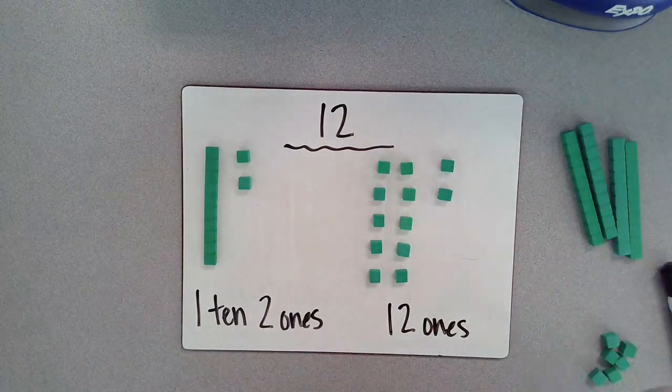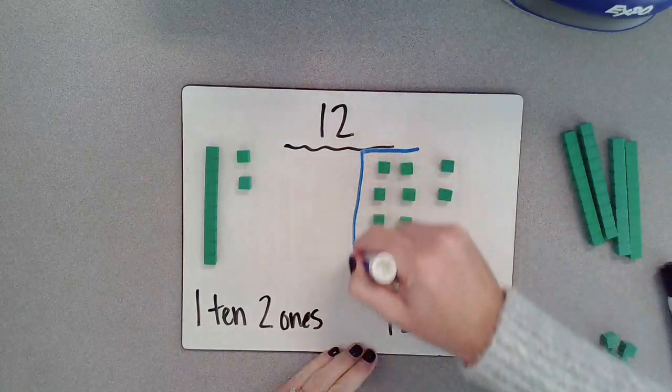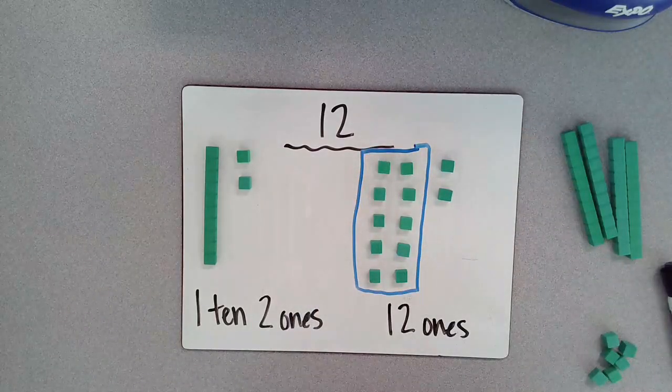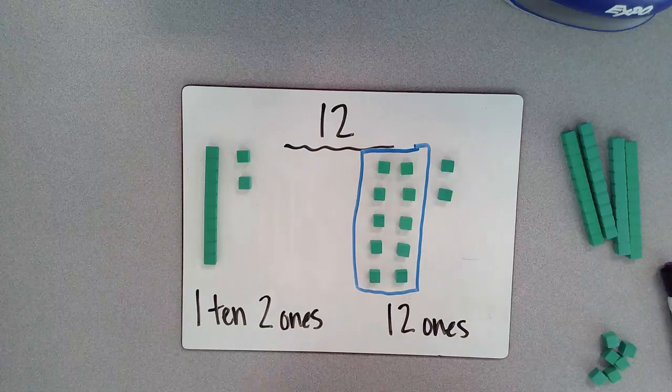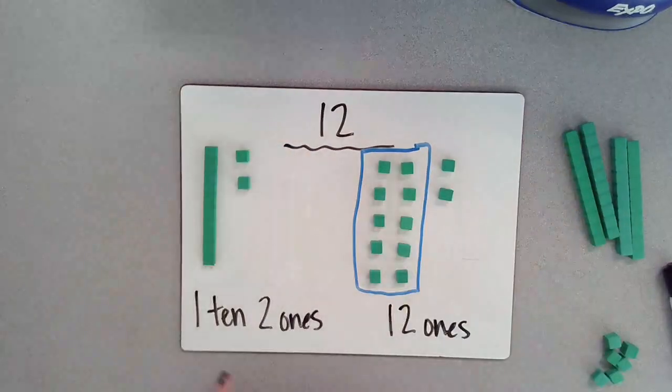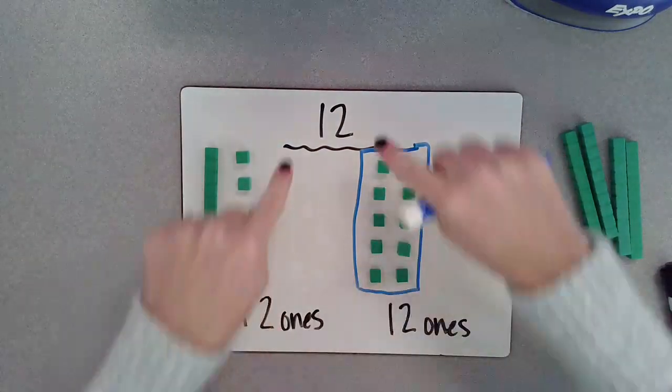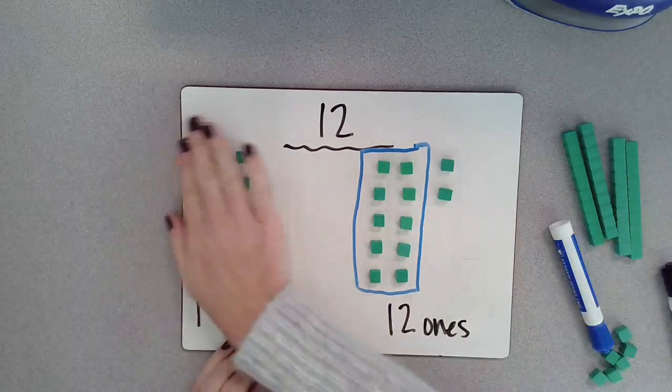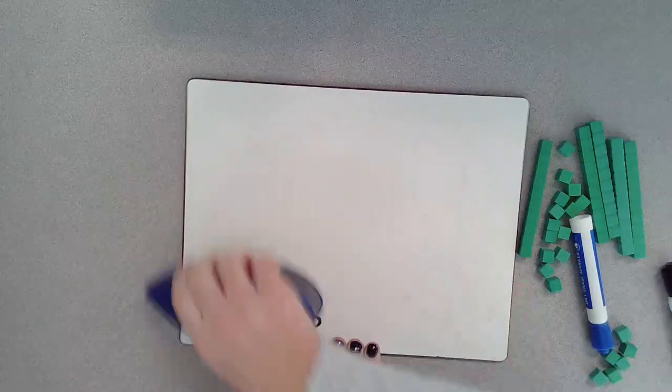And if you'll notice that this right here is very similar to a 10 frame because I have five and five. So that's just another way to think about it. So we can break apart 12 into one 10 and two ones, or we can break apart 12 into 12 ones. Let's go ahead and take a look at another number.